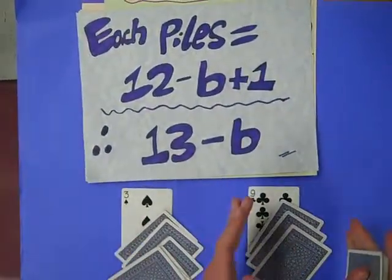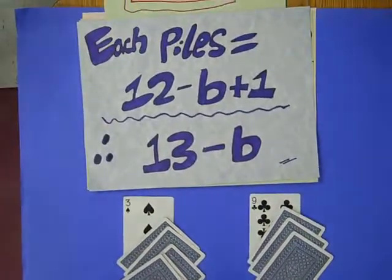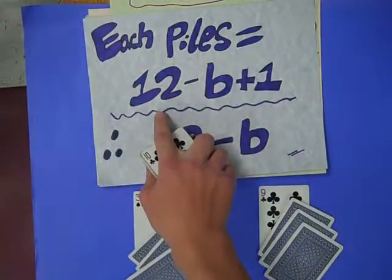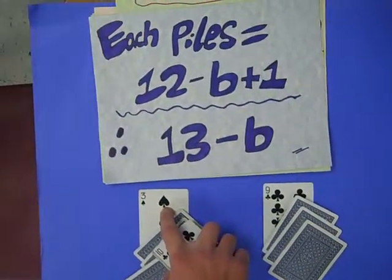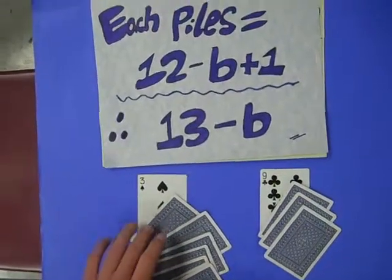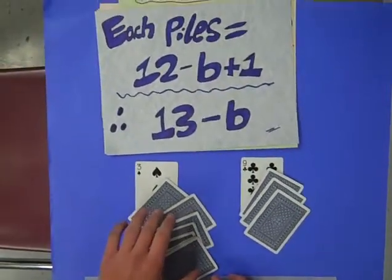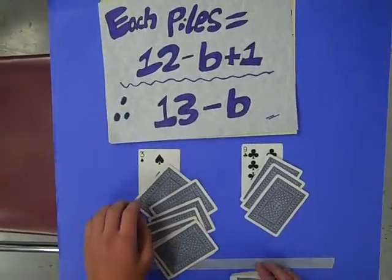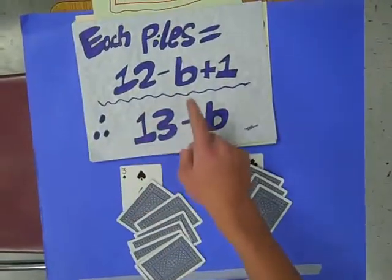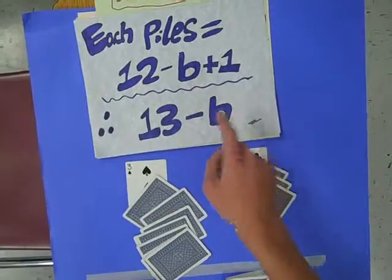Each pile, pile 1 and 2, is 12 minus b plus 1. 12 minus 3 plus 1. So 12 minus 3 is 9. 9 is the number of cards I laid down first. The 1 is the base card. So 12 minus 3 plus 1 will equal 10 cards.